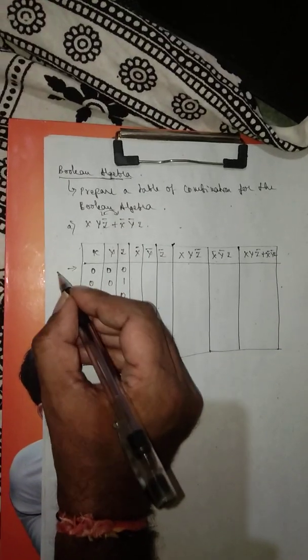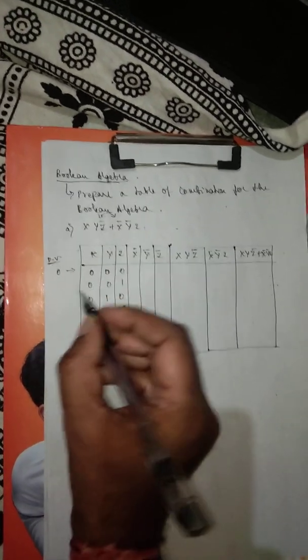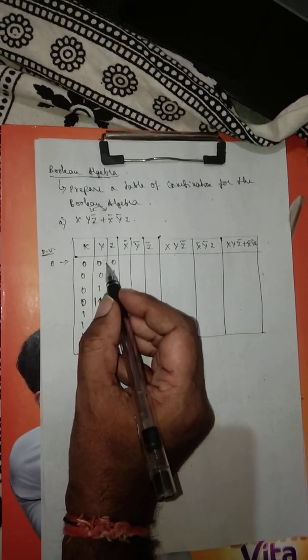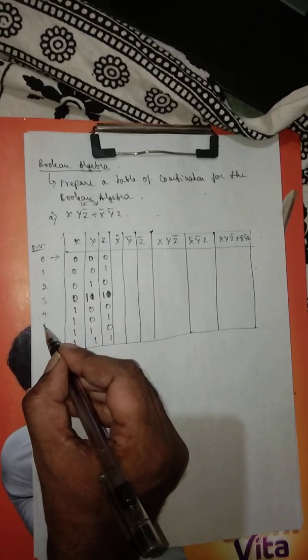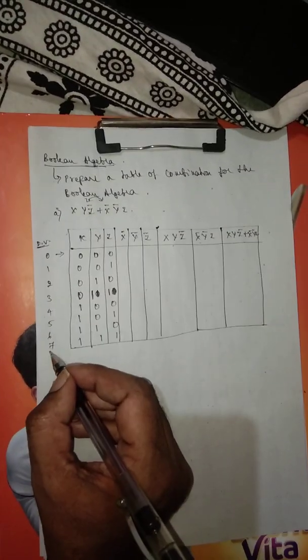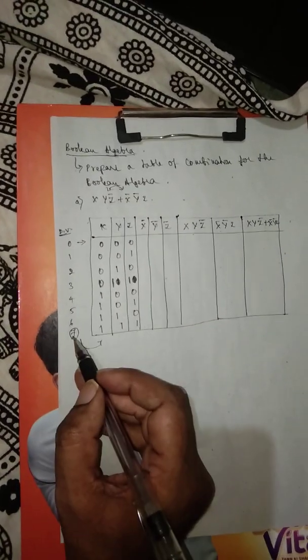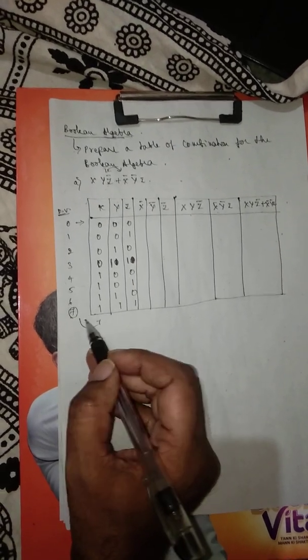If I want to write the decimal value, then this is the binary equivalent of 0, and this is 1, this is 2, this is 3, this is 4, this is 5, this is 6, and this is 7. Let me take an example and show you how this particular conversion is usually done — the decimal value of the last combination is 7.